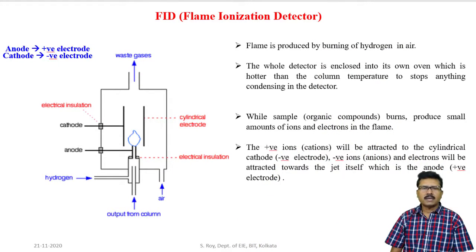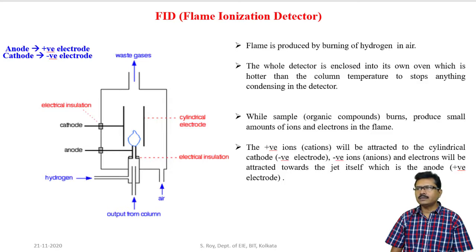First, I am explaining about flame ionization detector. Flame ionization detector is mainly used for organic compounds. In this case, flame is produced with the presence of hydrogen and air — hydrogen is used as a fuel and air is used as an oxidant. The whole detector system is placed into its own oven which is hotter than the column temperature, to stop anything condensing in the detector.